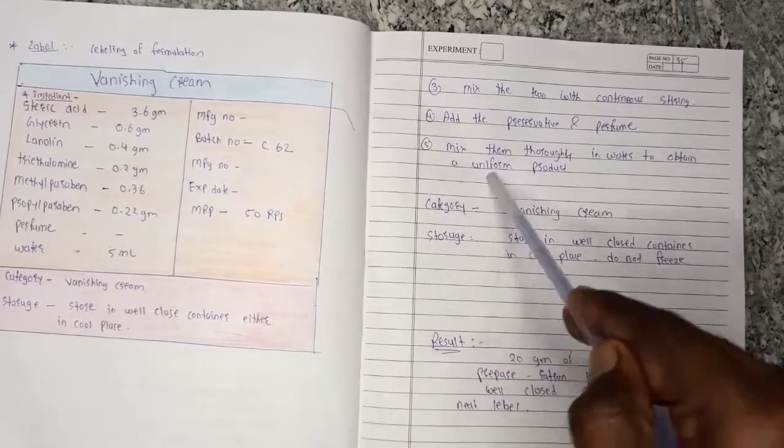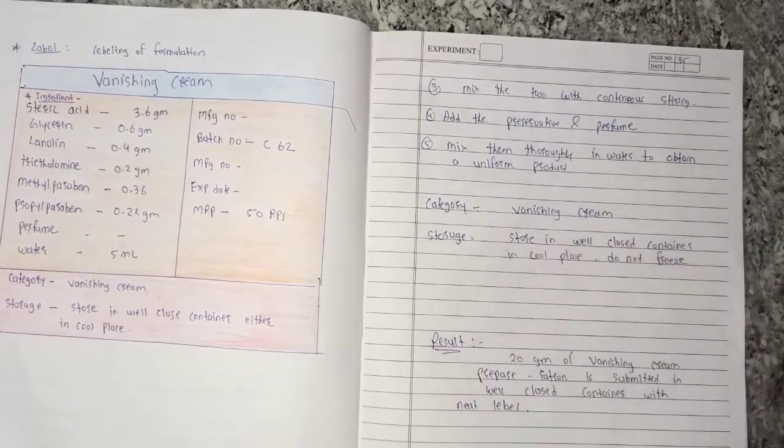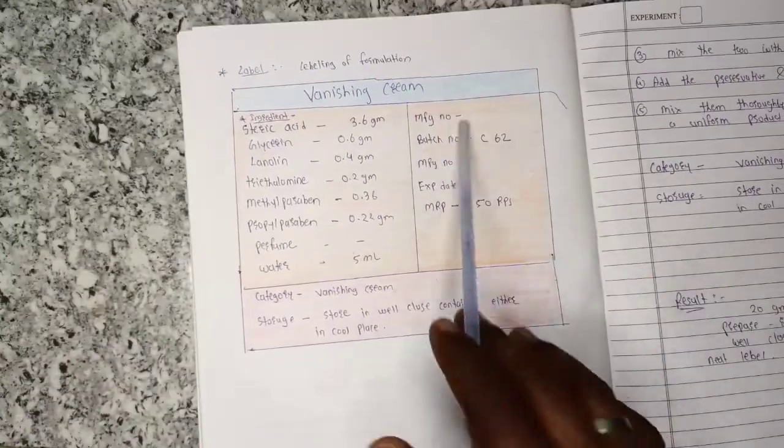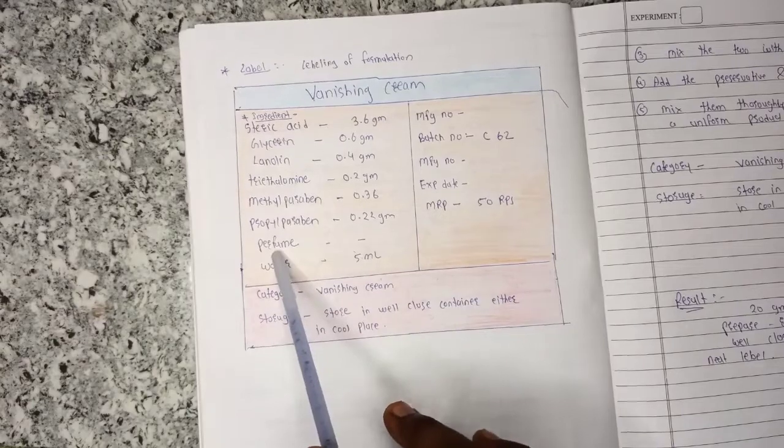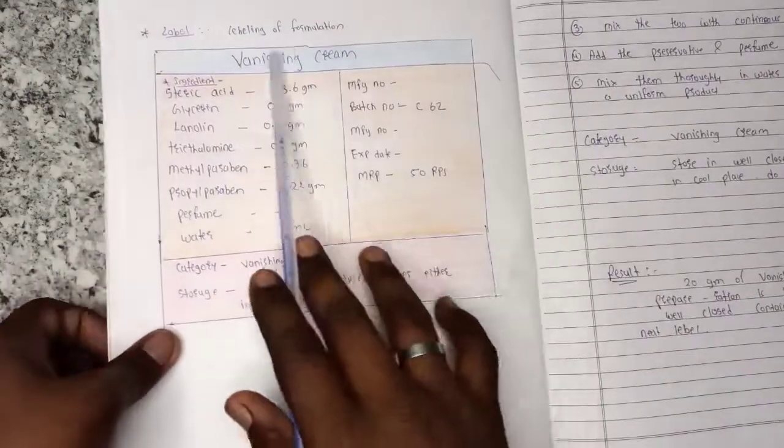After that, add water and stir until the preparation is ready. Then you will need a label. Add the ingredients to the label, along with category, storage condition, and heading.